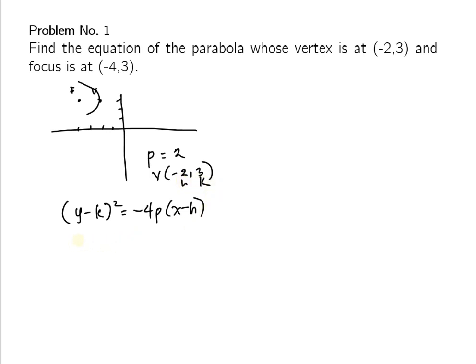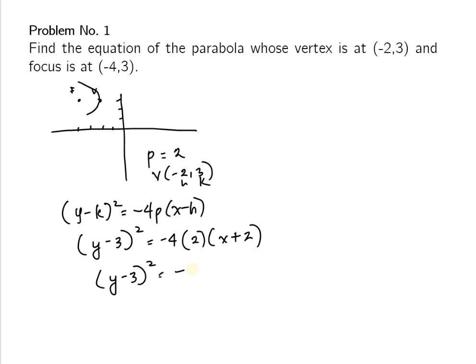We can now write the equation. By substitution: (y - 3)² = -4 × 2 × (x - (-2)), which gives the standard equation (y - 3)² = -8(x + 2). So this is our answer.